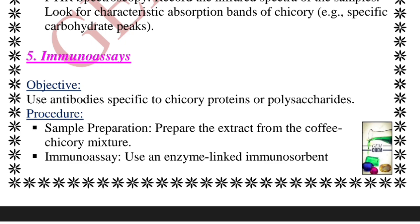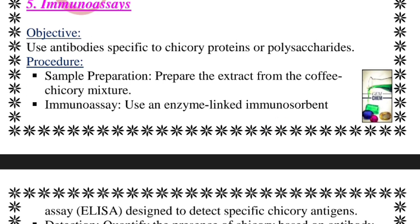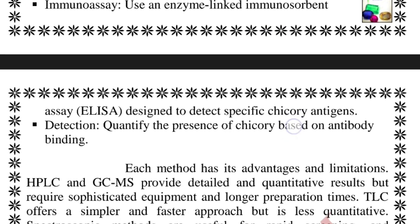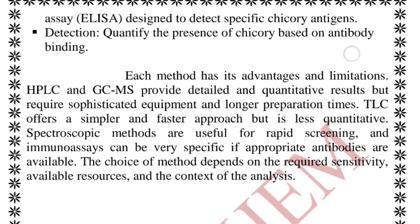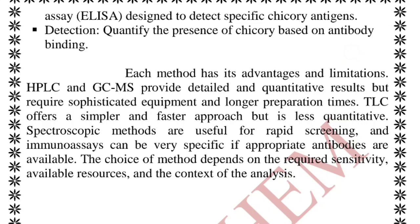For immunoassays, we use different kinds of antibodies which specifically target the chicory protein or polysaccharides. We prepare a sample and use an enzyme-linked immunosorbent assay (ELISA) designed to detect specific chicory antigens, then quantify the presence of chicory based on antibody binding. Each method has certain advantages and limitations, but the most detailed and sophisticated results are genuinely obtained by HPLC and GC-MS.